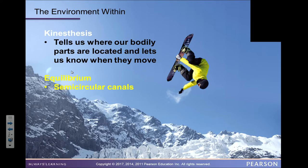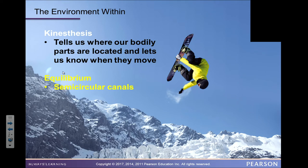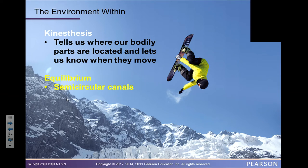Kinesthesis tells us where our bodily parts are located and lets us know when they move — that's part of your study guide. Equilibrium happens in the cerebellum, in the semicircular canals of the lower brain, and gives us a sense of balance. People who have dizziness or vertigo — which is even worse than dizziness — have momentarily lost their equilibrium.